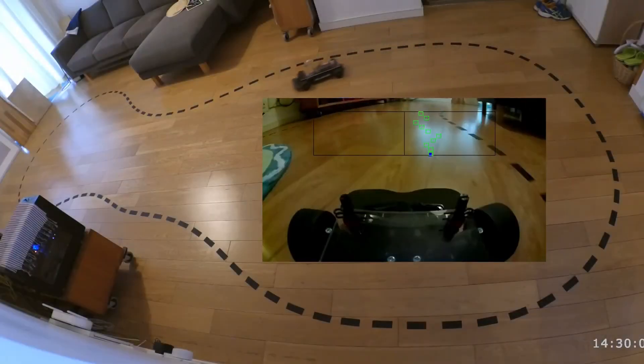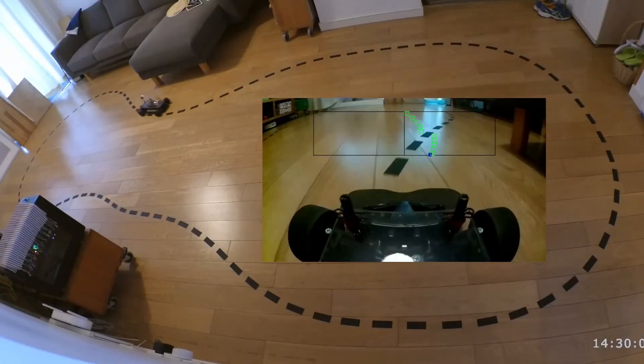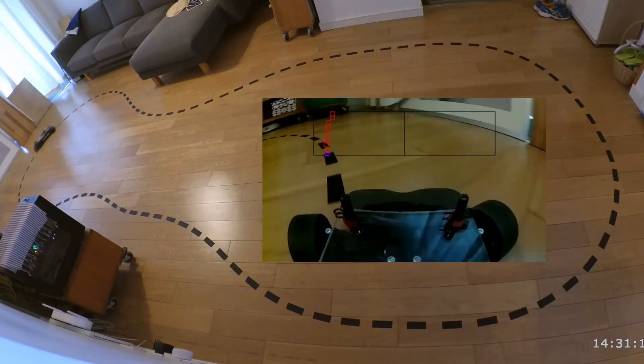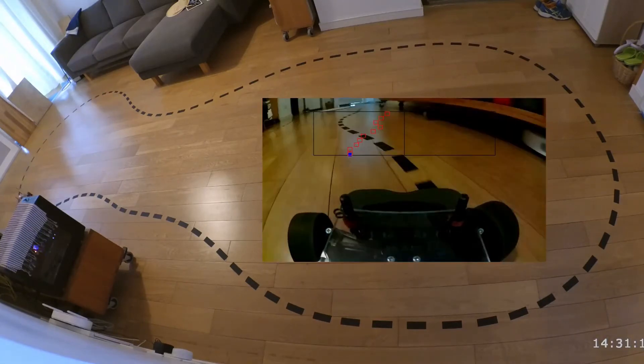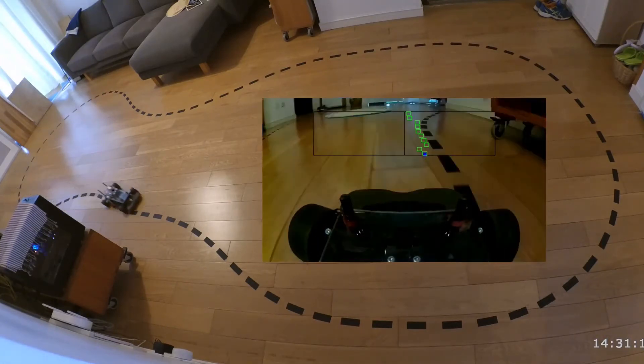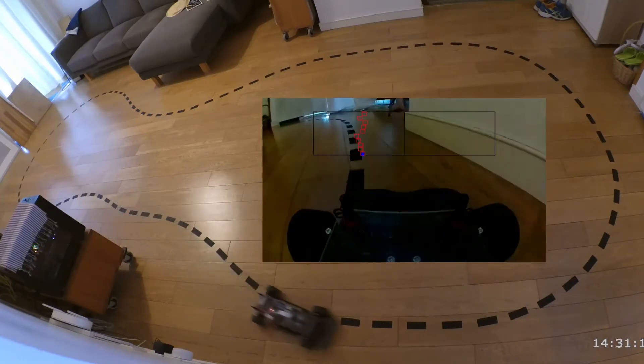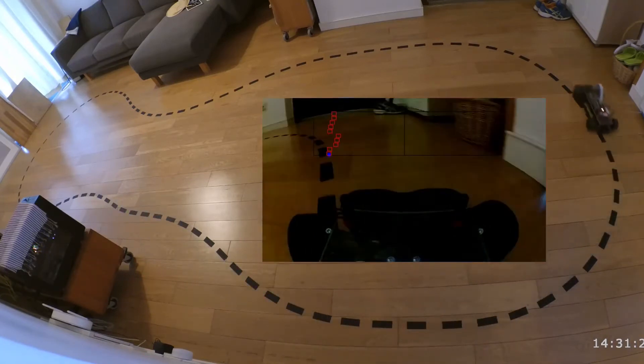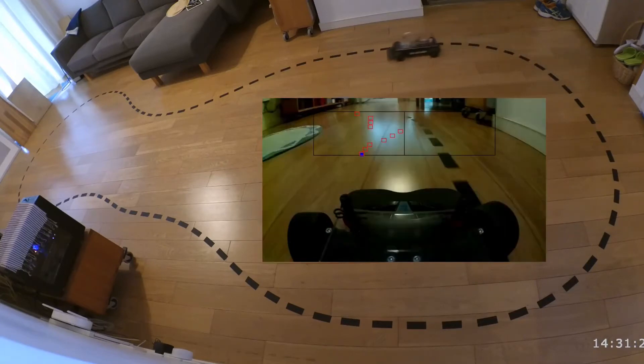As we saw in the previous video, the application of plain old behavior cloning, where we train the neural network policy to try and mimic the behavior of our expert human driver, kind of worked, in that eventually it was able to drive around the track a few times.